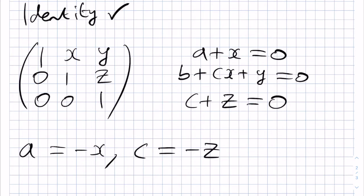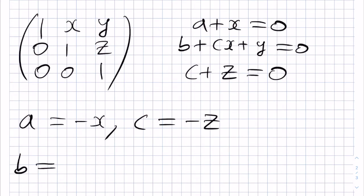and then finally, the middle equation tells us how to choose B, since we've already chosen A and C. We need B to be equal to minus Y minus CX from this equation. We want X, Y, and Z determining B, so we substitute in C equals minus Z, giving us XZ minus Y for how we choose B.